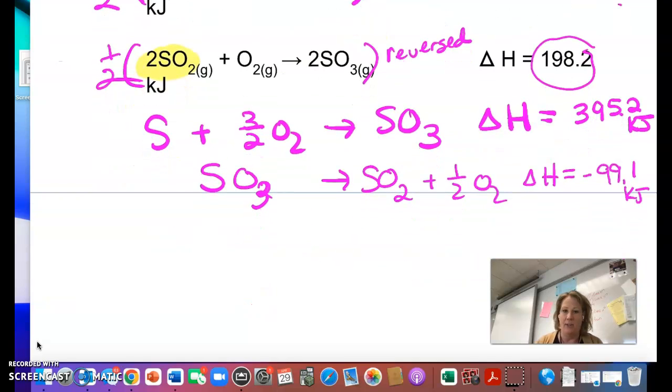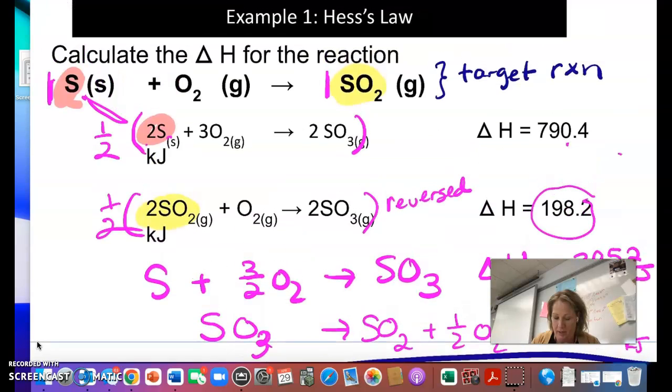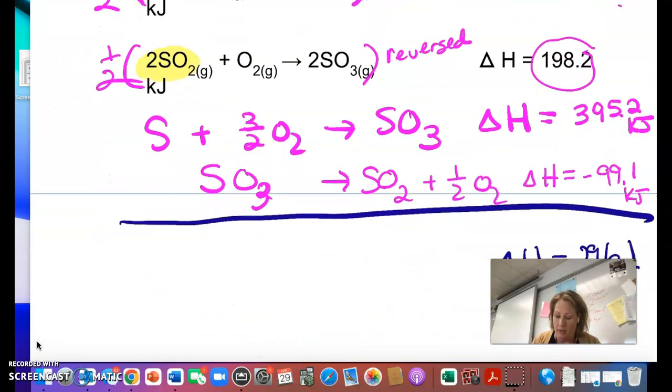So now I'm ready just to check. So these are kind of fun because you'll know right away if you did it right. So if you add them, our delta H is going to be 395.2 minus 99.1. So overall, that target reaction, the first reaction that was given up here, the one in bold, will have a delta H of 296.1. So it's endothermic.